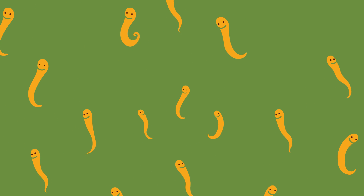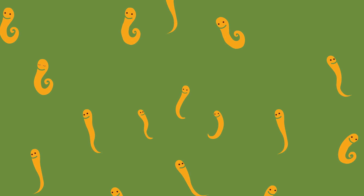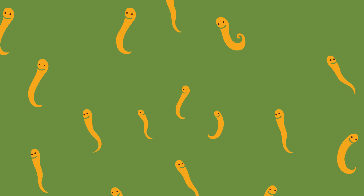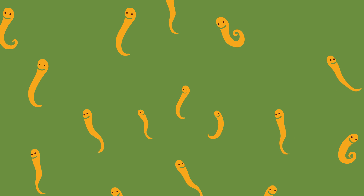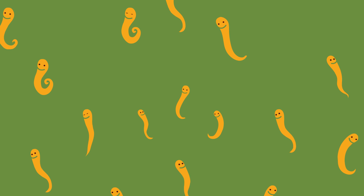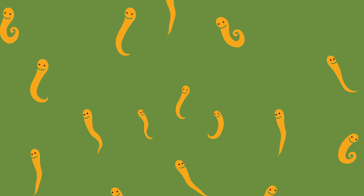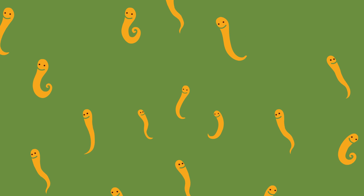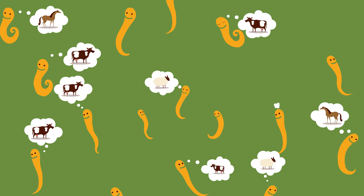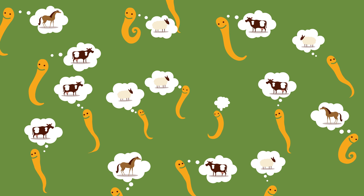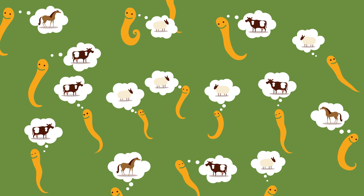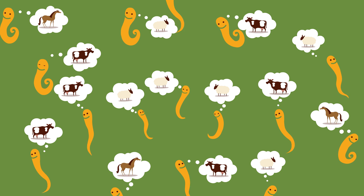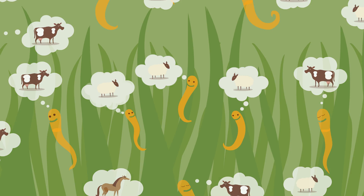Meet the worms. They all look very contented on pasture with their potential hosts around them. Although the worms might look very similar, they actually prefer different host animals. Some worms prefer horses, some prefer cows, while others prefer sheep.